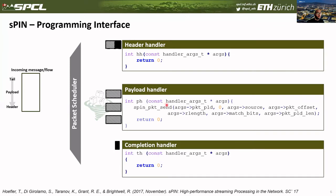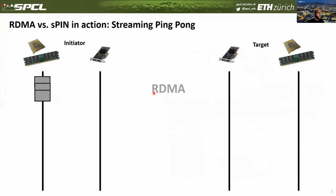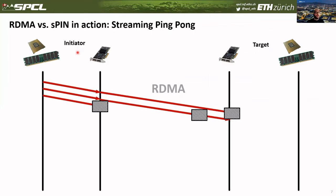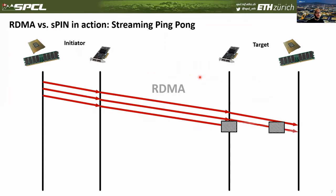These are user-defined functions specified by the application. To see SPIN in action, here we have a ping-pong communication pattern where we have the initiator — CPU, memory, and NIC — and similarly on the target side. The initiator wants to send some packets and then get them back; basically the target has to send them back. With RDMA, they need to reach the NIC of the target, then reach the host memory, and finally the CPU can realize there is a message that needs to be replied and send the packets back. In this case, our message is composed of, for example, three packets.